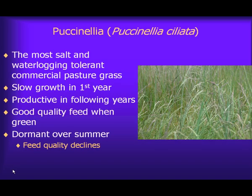In terms of the temperate perennial grasses, Puccinellia really is the king of salt land environments. It is the most salt and waterlogging tolerant of the commercially available pasture grasses — in fact it really relies on waterlogging to perform at its best. It's quite slow growing in the first year but can be quite productive in following years. When it's green its feed quality is quite good, but it does go dormant over summer and the quality of its dry feed is really only at maintenance levels.